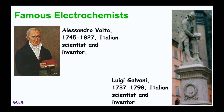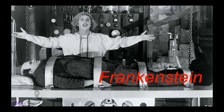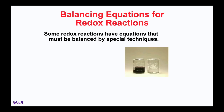Famous electrochemists include Volta and Galvani — voltaic and galvanic cells are named after them. They were both Italian scientists who apparently competed with each other. The first thing we need to do when talking about a redox reaction is balance an equation for it, and some redox reactions have special techniques. In this video example, iron and permanganate come together and a reaction occurs — we need to understand what happens and how to balance it.